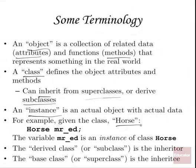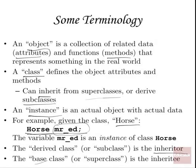For example, let's say we have a class called horse, which describes his weight, his age, when he was born, his owner, etc., and we use that as a type and declare an object called Mr. Ed. The variable Mr. Ed is an instance of the class horse. A derived class or subclass is the inheritor — it inherits from the superclass. The base class or superclass is the inheritee — it's the one who is inherited from. Like, a horse may inherit many attributes from a superclass called animal or racing animal.